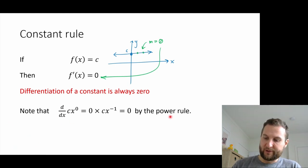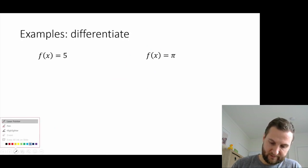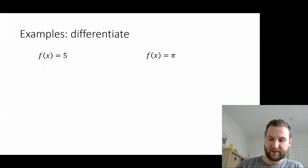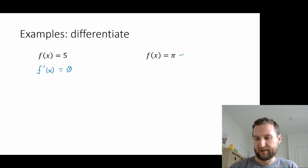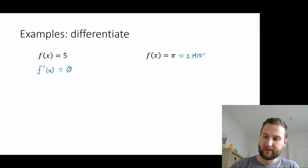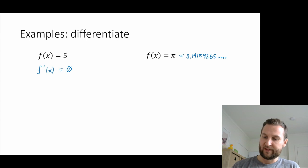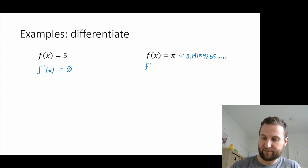You can also apply the power rule to verify this, which we'll get to in a minute. For example, if f(x) equals 5, then f prime(x) equals zero. And f(x) equals pi — remember pi is just a number, 3.14159265 and so on — its derivative f prime also equals zero.